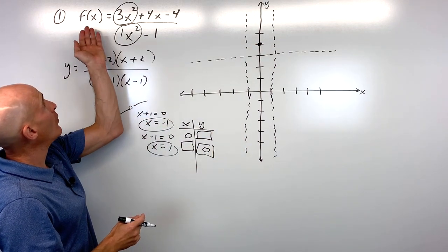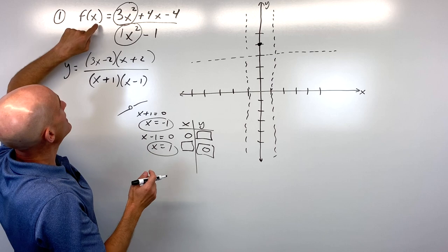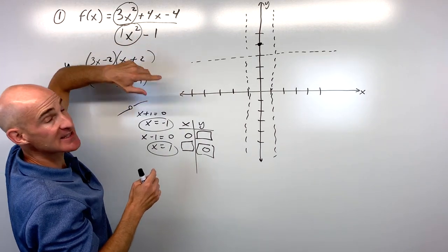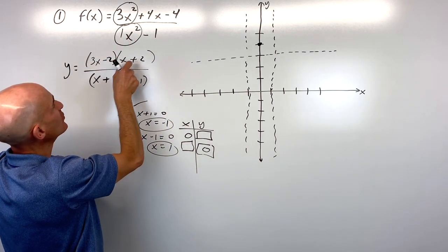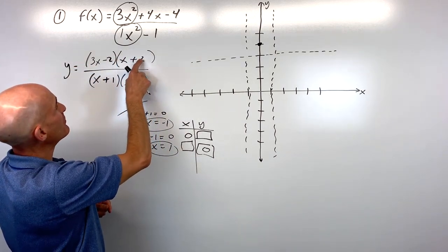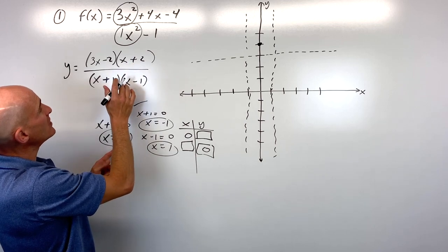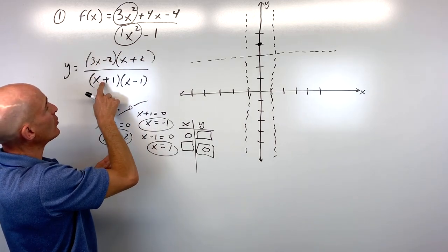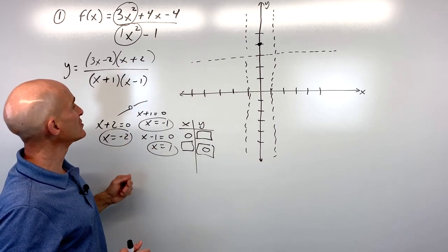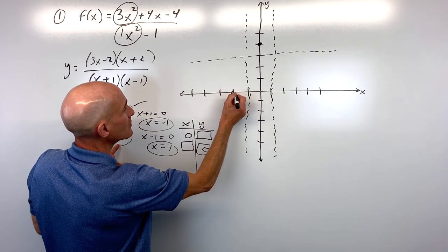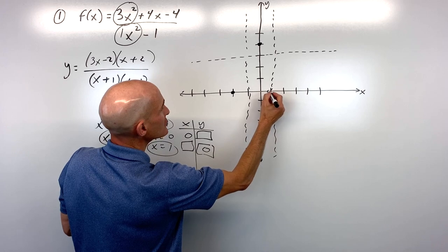To find the x-intercepts, set the numerator equal to zero. Setting x+2=0 gives x=-2. Setting 3x-2=0 gives x=2/3, which is just a little shy of 1. So the x-intercepts are at x=-2 and x=2/3.